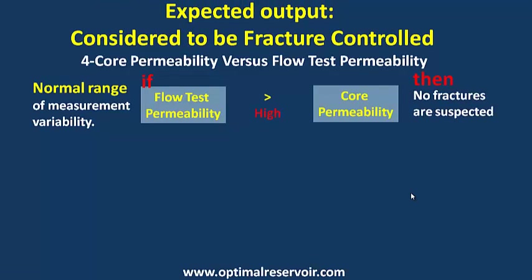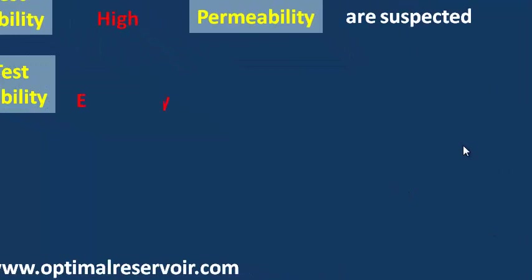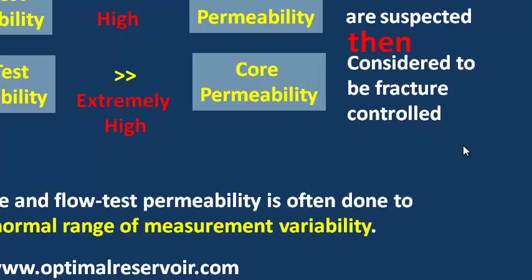The fourth technique is core permeability versus flow test permeability. If flow test permeability is higher than core permeability, then no fractures are suspected. But if flow test permeability is extremely higher than core permeability, then it is considered to be fracture-controlled, because it is above the normal range of measurement variability. A comparison of core and flow test permeability is often done to give an idea of the normal range of measurement variability.